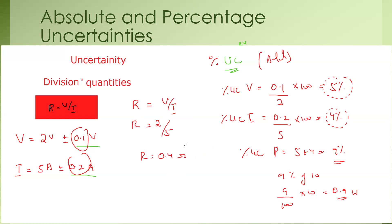What about the uncertainty? Uncertainty always adds. So first we work out the percentage uncertainty in voltage — that is 5% — and then the percentage uncertainty in the current, which is the uncertainty divided by value recorded multiplied by 100. We get a total of 9% uncertainty in the resistance.